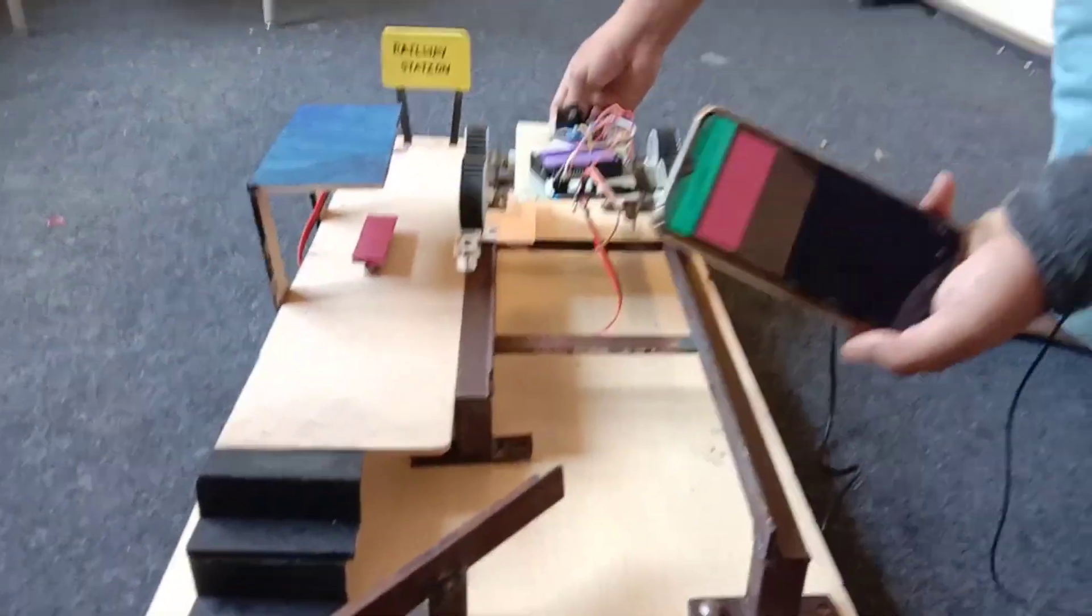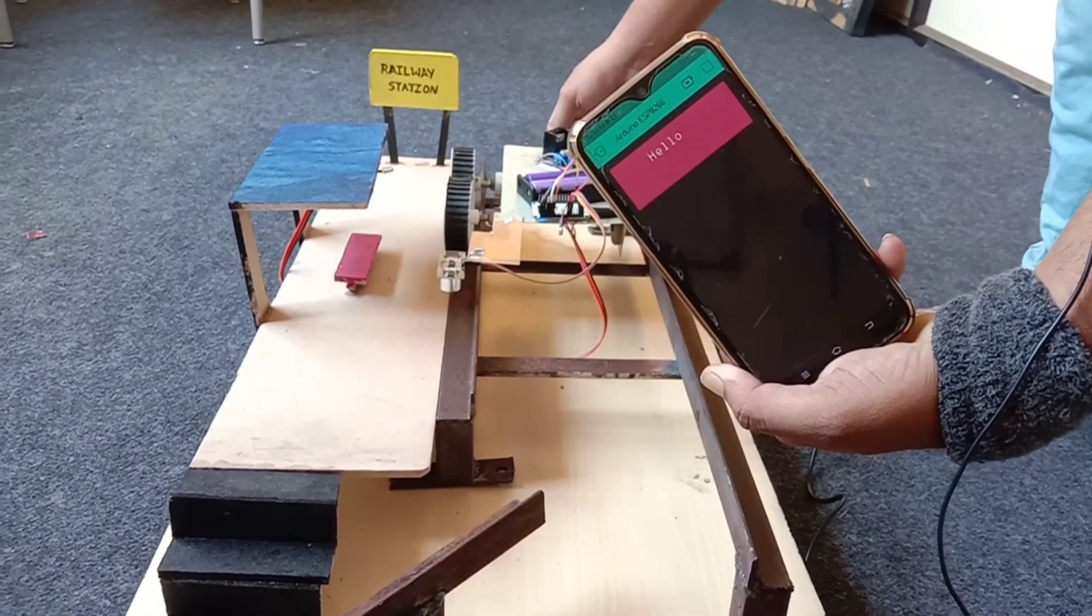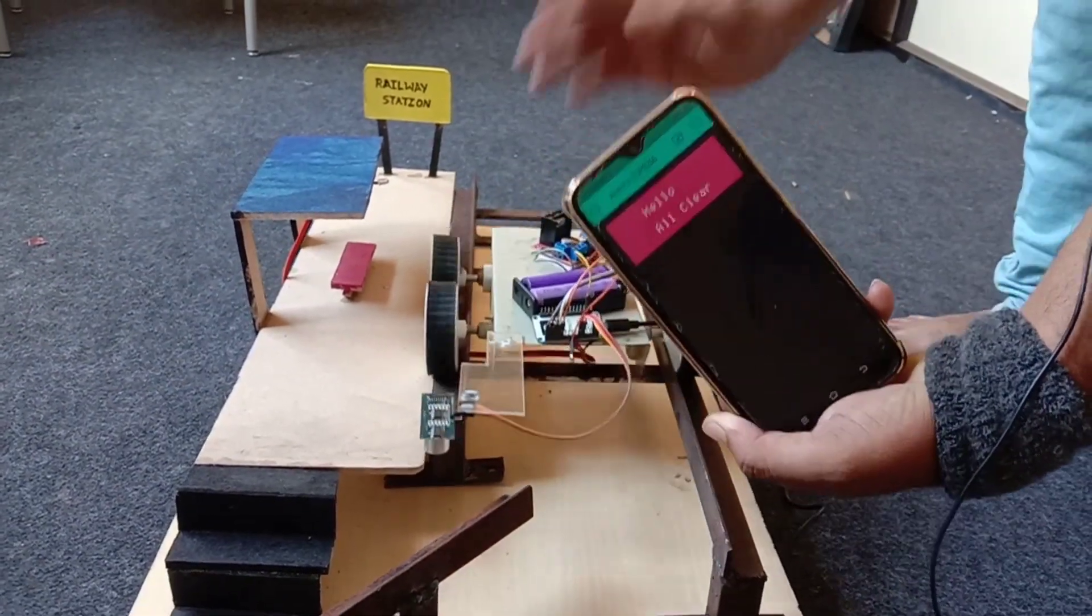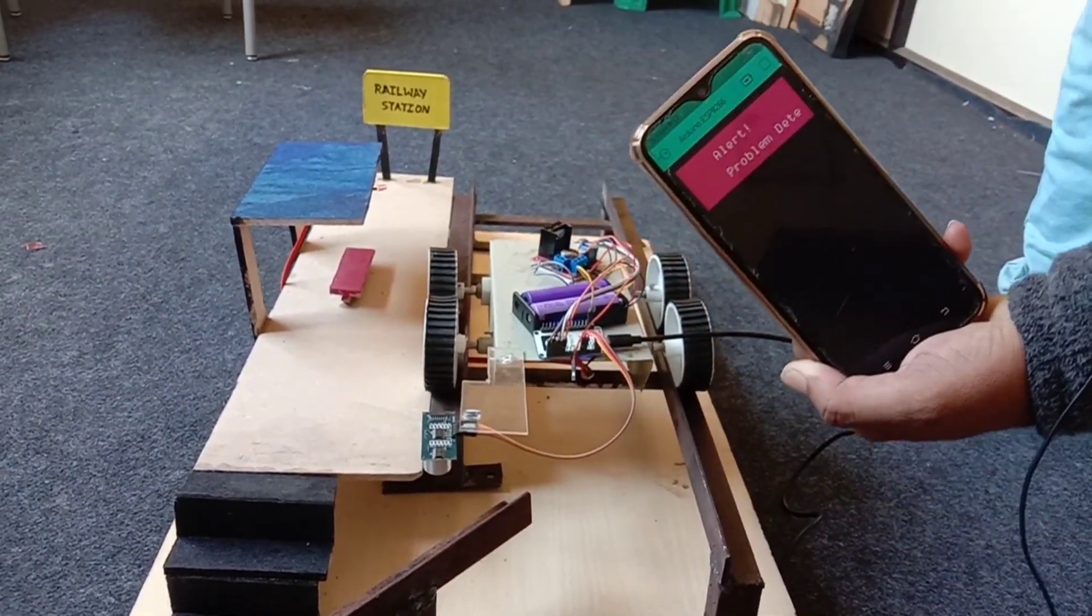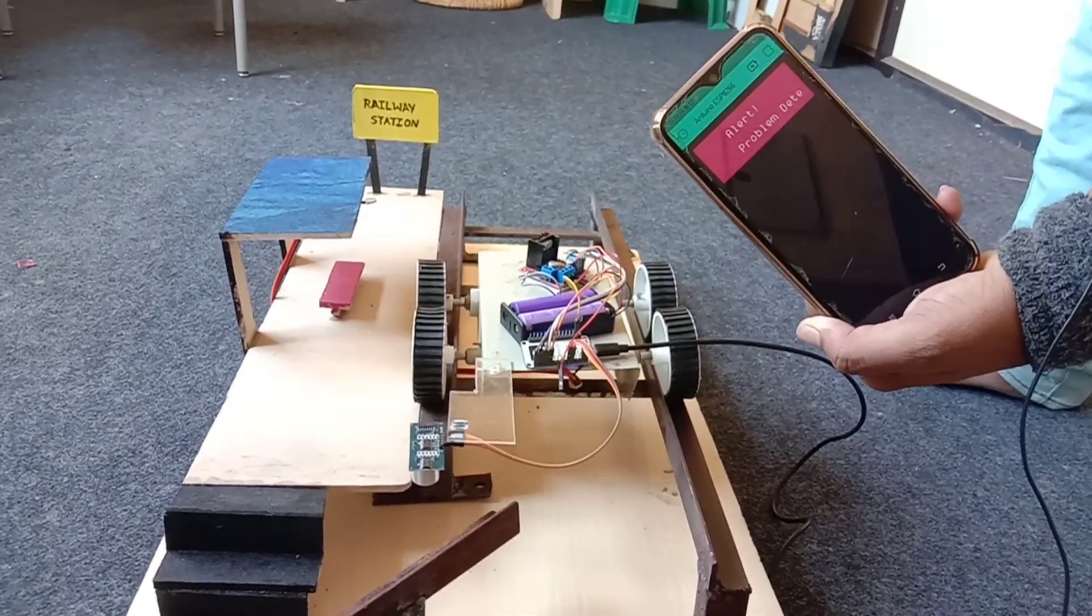So when I am putting it on the tracks, you can see that it says all clear. While it is moving and it detects some sort of issues out there, it is saying that there is a problem on the track.